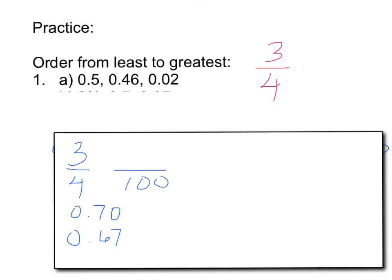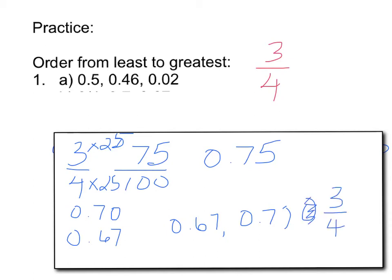So what we need to do is take 3/4 and put it into a decimal. So these are all out of hundreds. I'm going to see if I can make this out of hundreds. 4 times what is 100? Well, 4 times 25 would make 100. So 3 times 25 is 75. So that would make this 0.75. Now I can very easily compare those. 0.67 is smallest, 0.7 is next, and 0.75, which is actually 3/4, is largest.